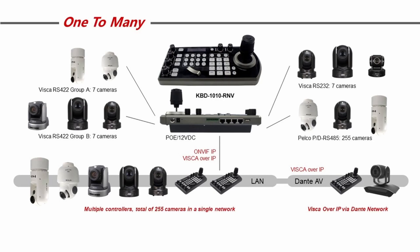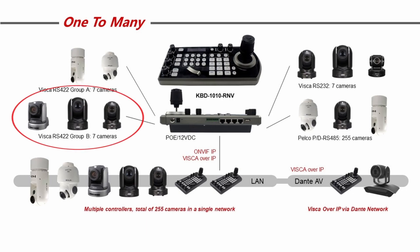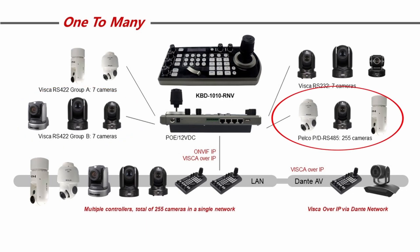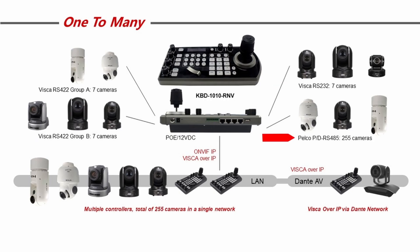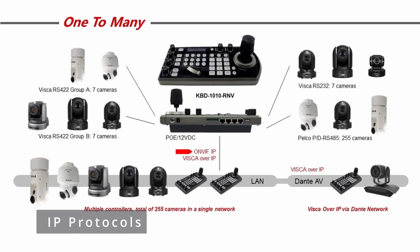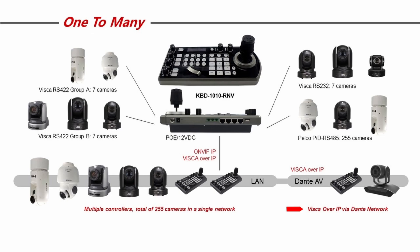Here's a diagram that explains very well how our KBD-1010 universal keyboard is able to send multiple PTZ controls across the same network system. We divide those into two categories: serial and IP. In the serial category, in the upper part of this diagram, we send RS-422, RS-485, and RS-232. Among the serial protocols, we have VISCA over RS-422 and RS-232, and we send PELCO P and D across RS-485. Moving into IP over the network, we start with ONVIF — familiar to those in the security and situational awareness world — and VISCA over IP. VISCA over IP may be the most common way to send PTZ control across a network, and then we have VISCA over IP across the Dante AV network, which is what I get to show you today.